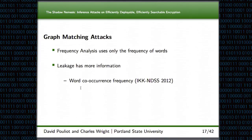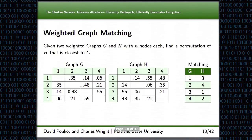But these schemes leak more information than just the frequencies of words. Our attack in particular takes advantage of the co-occurrence frequencies — that is, how often two words will appear together in the same document. I also want to define what we mean by weighted graph matching. With weighted graph matching, we're given two graphs G and H, represented as adjacency matrices, where the numbers in the matrices represent the weights of the edges between nodes in the graph. We simply want to find a permutation from one graph to the other that makes it closely resemble the other as much as possible.